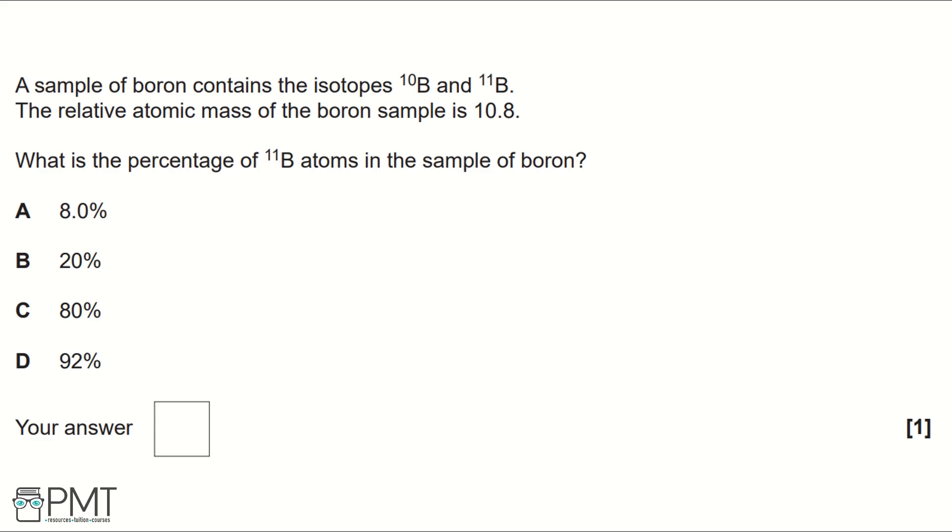A, 8%. B, 20%. C, 80%. Or D, 92%. If we imagine this like a number line, the relative atomic mass will fall somewhere between 10 and 11, depending on the percentages of 10B and 11B.